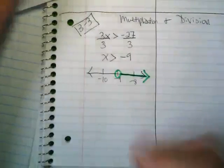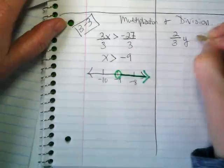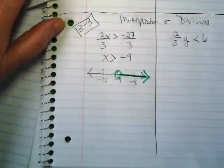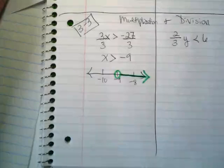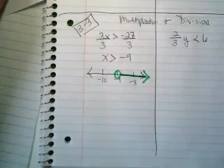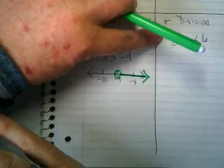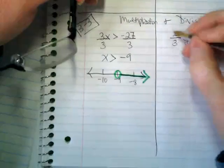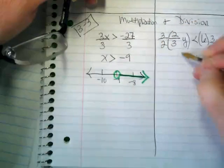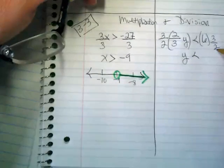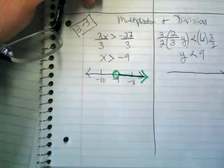You might also have a division problem that would look like this. 2 thirds y is less than 6. Why is it a division problem? Because it's a fraction and every fraction has a division problem. What's the opposite of 2 thirds? Because we want the number in front of this y to be a positive invisible 1. So we're going to multiply both sides by 3 over 2. We're going to get y is less than 18 divided by 2 is 9.